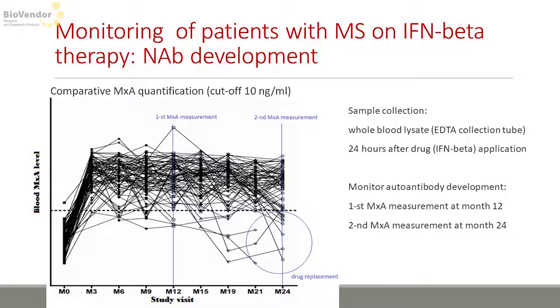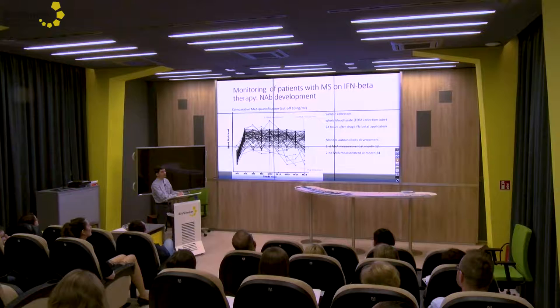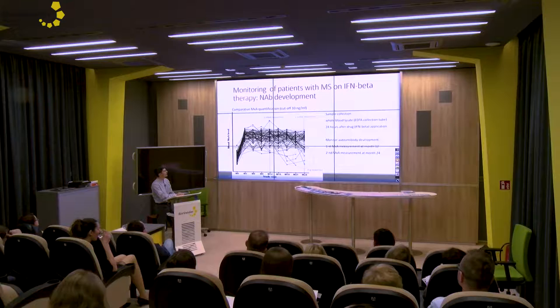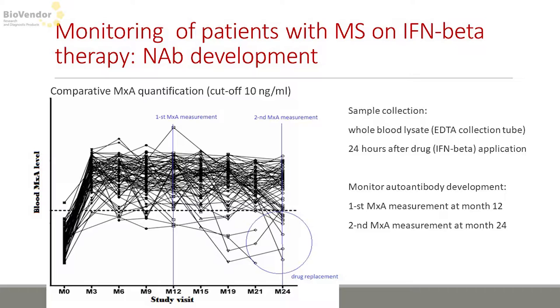In more detail on how to monitor neutralizing antibodies: in patients treated with interferons, after the first dose MXA level is raised and keeps that level for the whole time of treatment. In several cases the MXA level goes down, meaning they probably produce autoantibodies and therefore do not react to the treatment, resulting in very low MXA level. These patients are suggested for drug replacement. The European Medicines Agency recommends determining MXA level in every patient treated with interferon, every 12 months — so at months 12, 24, 36, and so on.